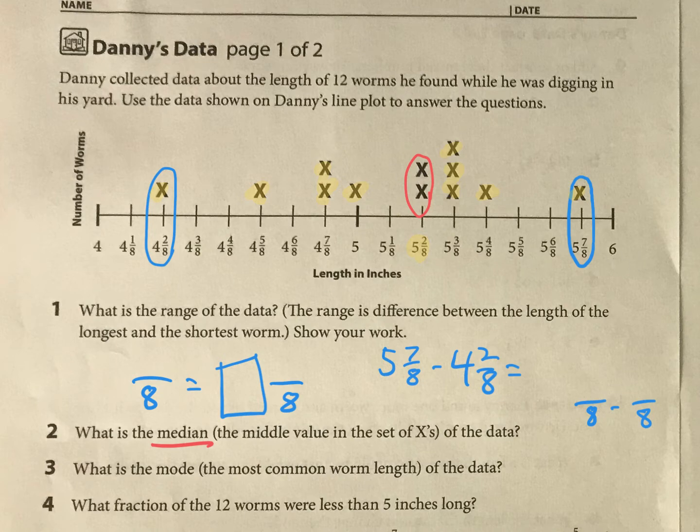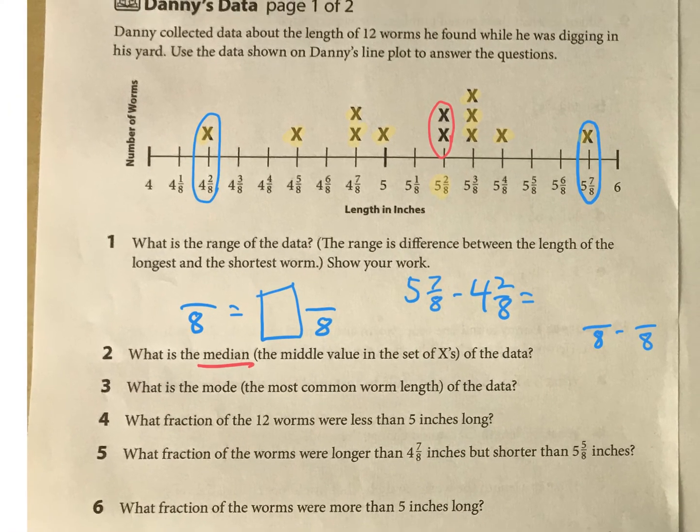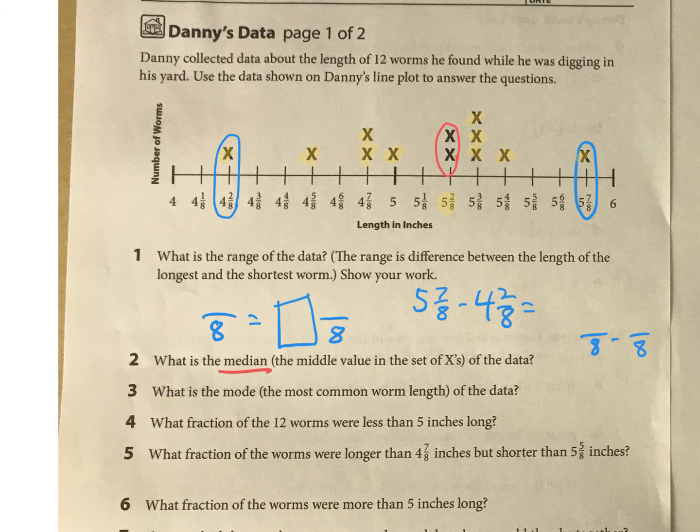And then, what fraction of the 12 worms were less than 5 inches long? Okay, so less than 5—it's going to happen right here. So for this one, the interesting thing is it says 'what fraction,' so there's 12 worms total. So how many were less than 5? Well, one, two, three, four. So the answer will be 4/12, or you can write that in a different way if you want to.